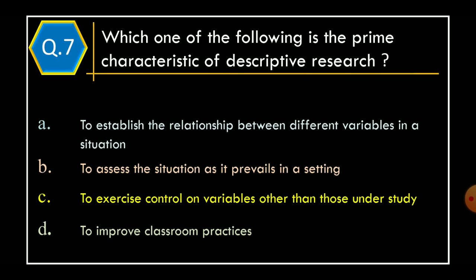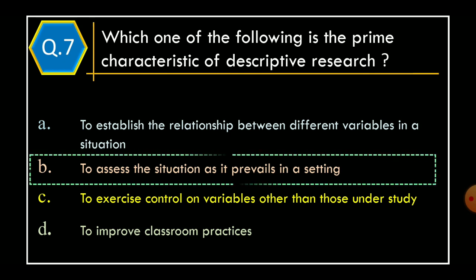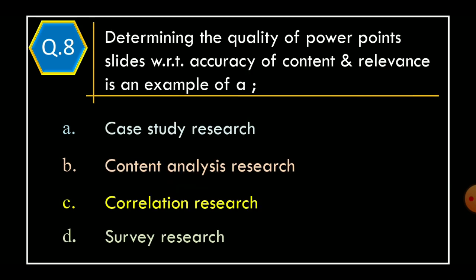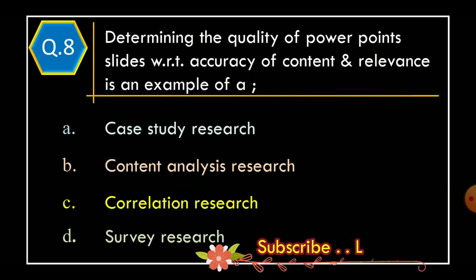Question 7: which one of the following is the prime characteristic of descriptive research? Option A: to establish the relationship between different variables in a situation. Option B: to assess the situation as it prevails in a setting. Option C: to exercise control on variables other than those under study. Option D: to improve classroom practices. The correct option is Option B: to assess the situation as it prevails in a setting.